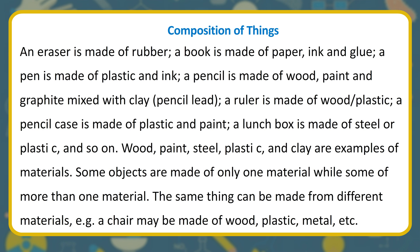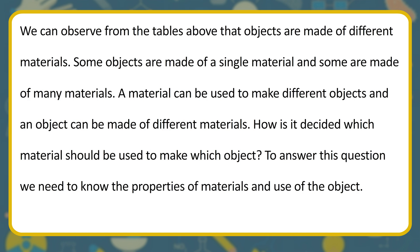Wood, paint, steel, plastic, and clay are examples of materials. Some objects are made of only one material while some are made of more than one material. The same thing can be made from different materials — for example, a chair may be made of wood, plastic, or metal. A material can be used to make different objects, and an object can be made of different materials.